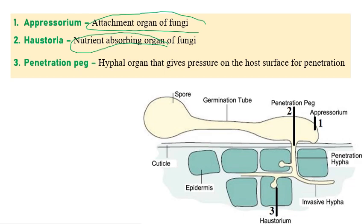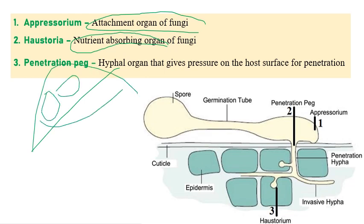Another structure is called the penetration peg, a hyphal organ. It actually gives pressure — imagine if it is a leaf surface, the penetration peg is like a needle. It penetrates inside the leaf, giving pressure to the leaf surface so that it automatically penetrates inside the epidermal cells.